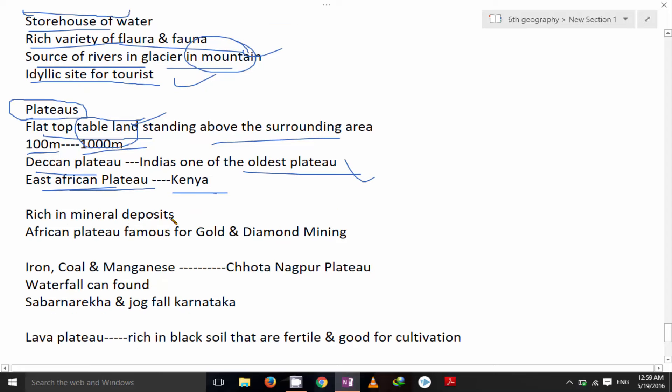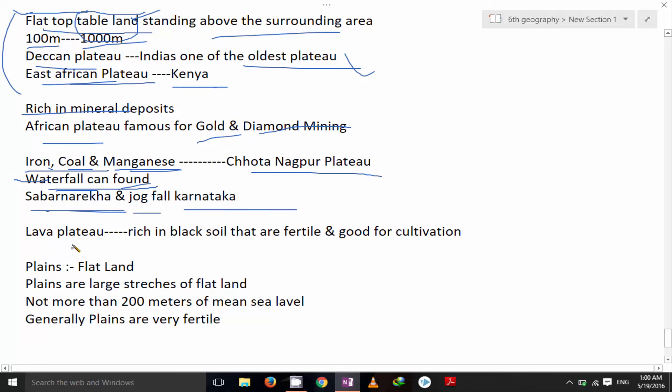Plateaus are rich in mineral deposits. African plateau for example famous for the gold and diamond mining. Iron, coal and manganese found in Chhota Nagpur plateau. Waterfall can be found in plateaus, for example Sabarnarekha and Jog fall from Karnataka. Lava plateau rich in black soil that are fertile and good for the cultivation.